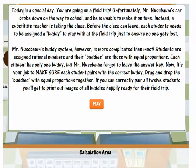Mr. Nussbaum's buddy system however is more complicated than most. Students are assigned rational numbers and their buddies are those with equal proportions. Each student has only one buddy but Mr. Nussbaum forgot to leave the answer key. Now it's your job to make sure each student pairs with the correct buddy. Drag and drop the buddies with equal proportions together. If you can correctly pair all 12 students you'll get to print out images of all buddies happily ready for their field trip.